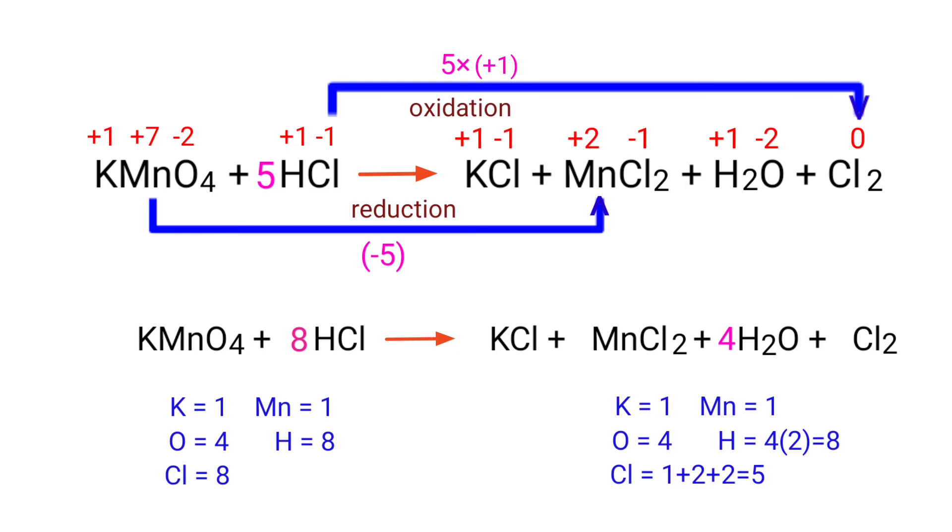The hydrogen atoms are balanced, but the chlorine atoms are unbalanced. To balance that we need to put a coefficient of 5 by 2 in front of Cl2.